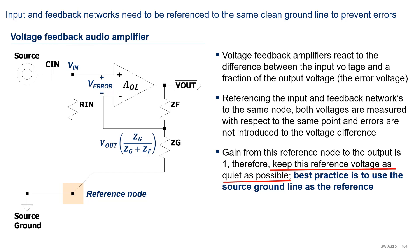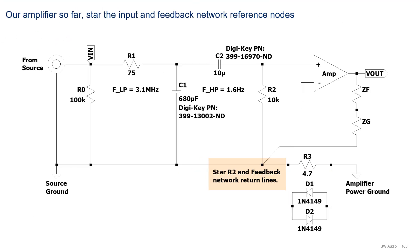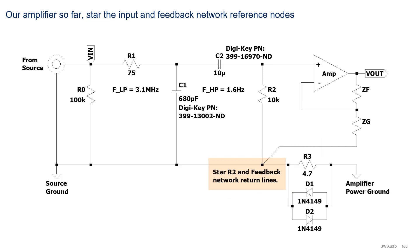As far as I'm aware, the best practice is to use the source's ground. Going back to our amplifier, the figure here shows the latest top-level schematic. Note how the feedback and the input networks are now starred. To accomplish this, I moved the ground decoupling resistor R3 so that the entire input and feedback networks are referenced to the same source ground. This is a change from the circuit shown in the video where we designed the input network. Also, notice that the feedback network is still generic since we have not designed it yet.